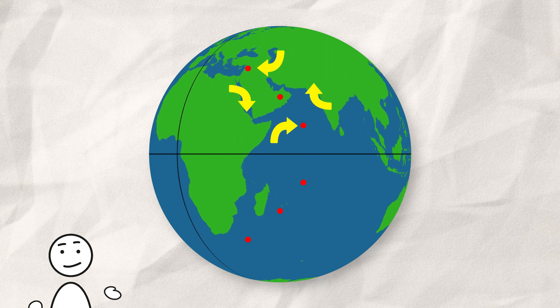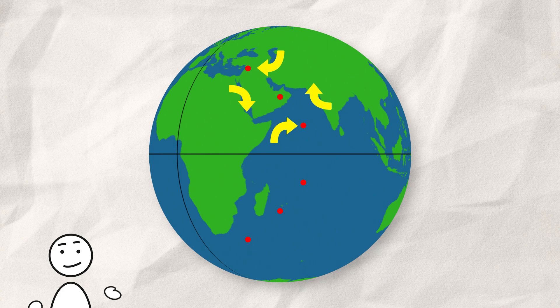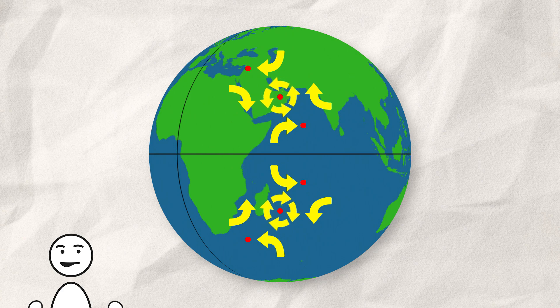You can see that the northern hemisphere deflects to the right, while the southern hemisphere deflects to the left. This results in a counterclockwise rotation in the north and a clockwise rotation in the south. Pretty easy so far.